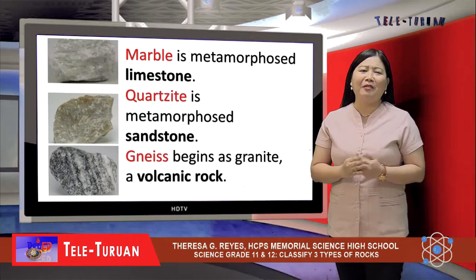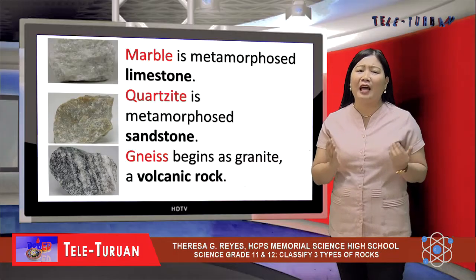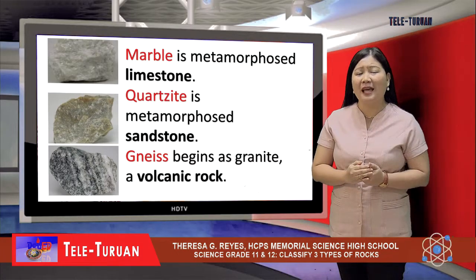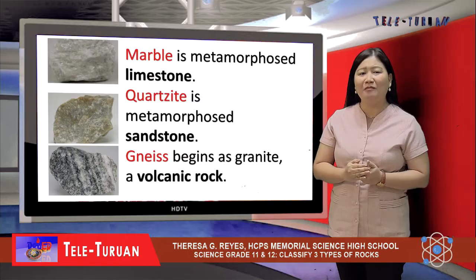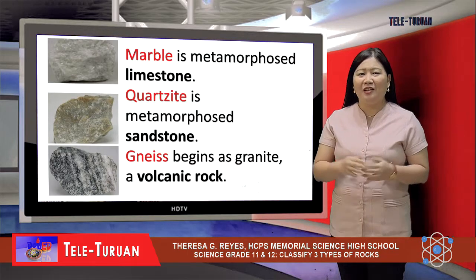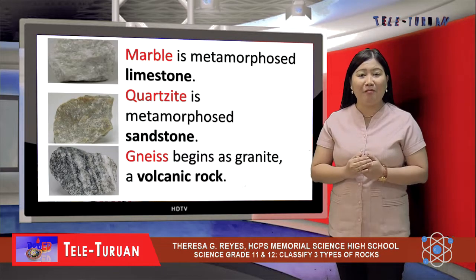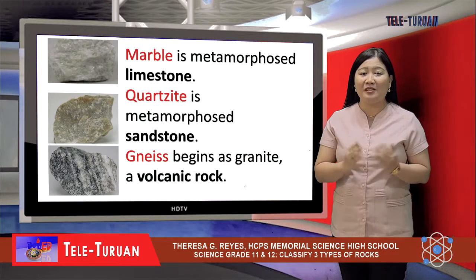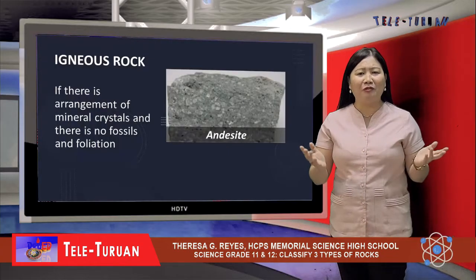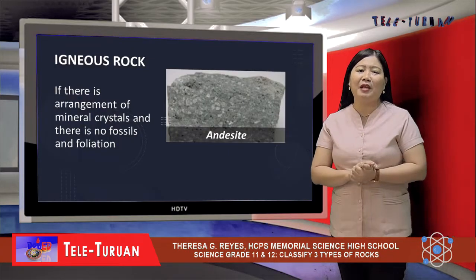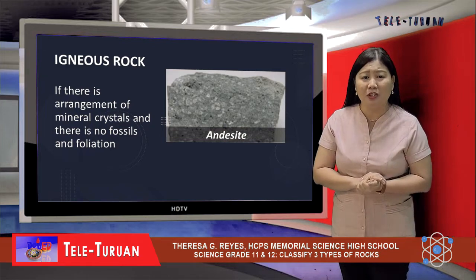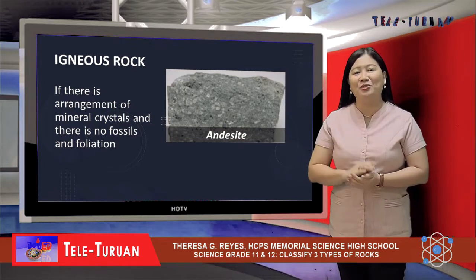Amazingly, marble is metamorphosed limestone. Quartzite is metamorphosed sandstone. And gneiss sometimes begins as granite, a volcanic rock. So if you will be asked to classify samples of rocks, you have to examine them and look for their characteristics. For example, if there is arrangement of mineral crystals and there are no fossils and no foliation, that is an igneous rock.